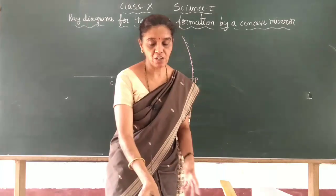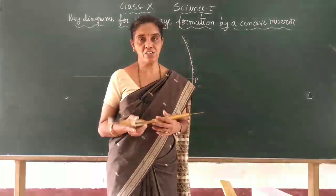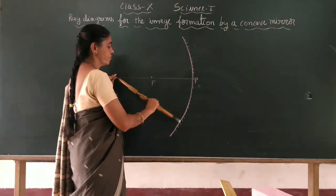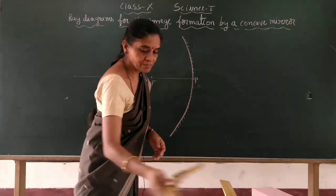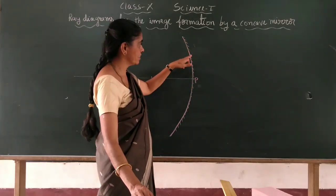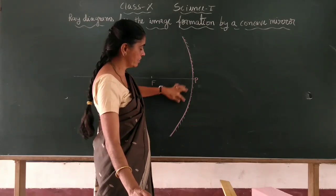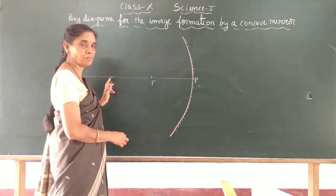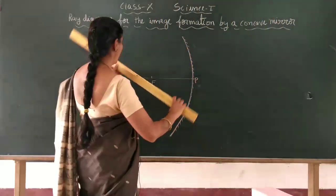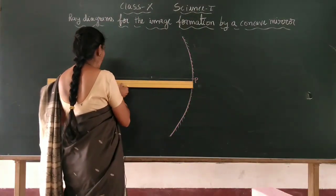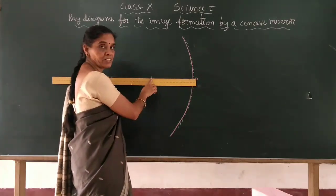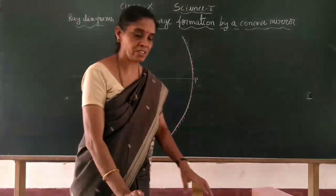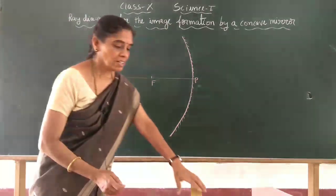To draw the diagram, first take a large radius using your compass and mark one point. Using this as the center of curvature, draw the concave mirror. The back side is a drawn line indicating the front reflecting side. Mark P as the pole of the mirror and C as the center of curvature. Exactly at the midpoint between C and P, mark the point F. Now for the first case, I will take the object beyond C — beyond the center of curvature.